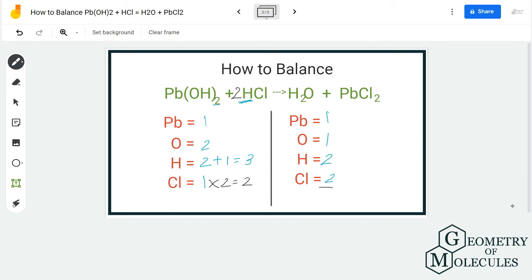So now we have two chlorine atoms on reactant side as well as product side, which means we have to update our hydrogen atoms on the reactant side as well. So now we have two plus two, four hydrogen atoms.